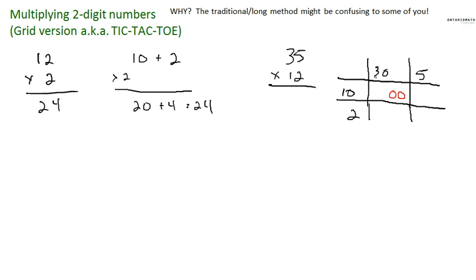Now I'm going to do thirty times two. How many zeros do I have? I have one zero — from thirty. And three times two equals six. So thirty times two is sixty. Next, five times ten. There's one zero, and five times one is five, so five times ten is fifty. And the last one — there are no zeros. It's just five times two, and five times two equals ten.